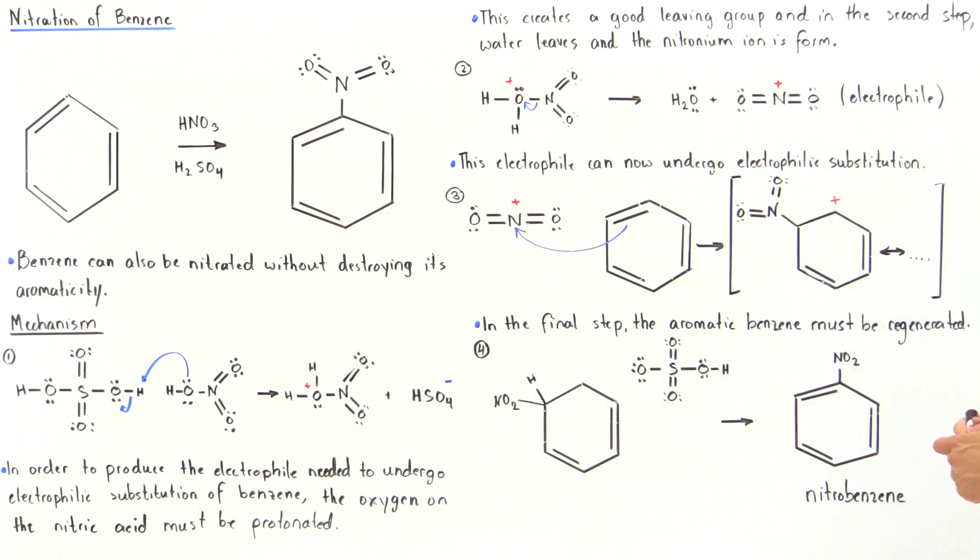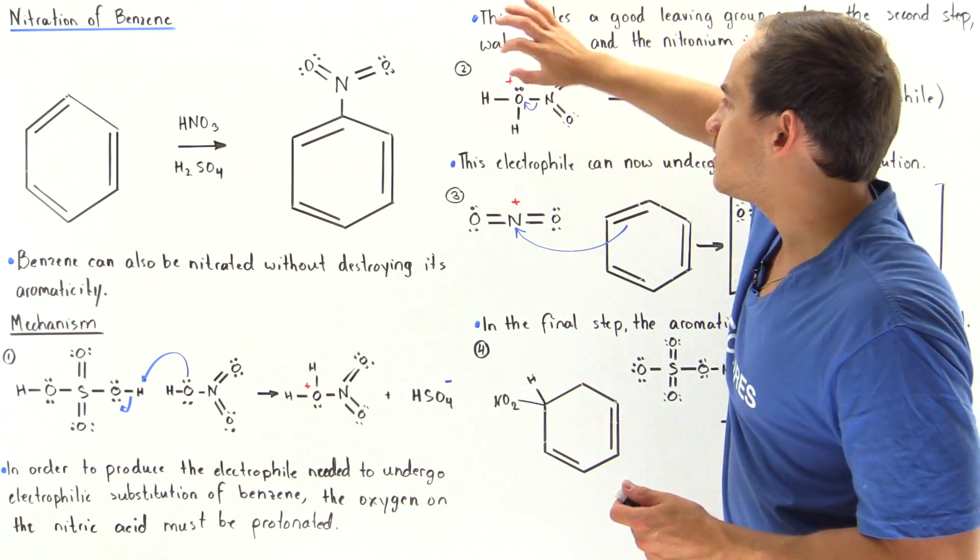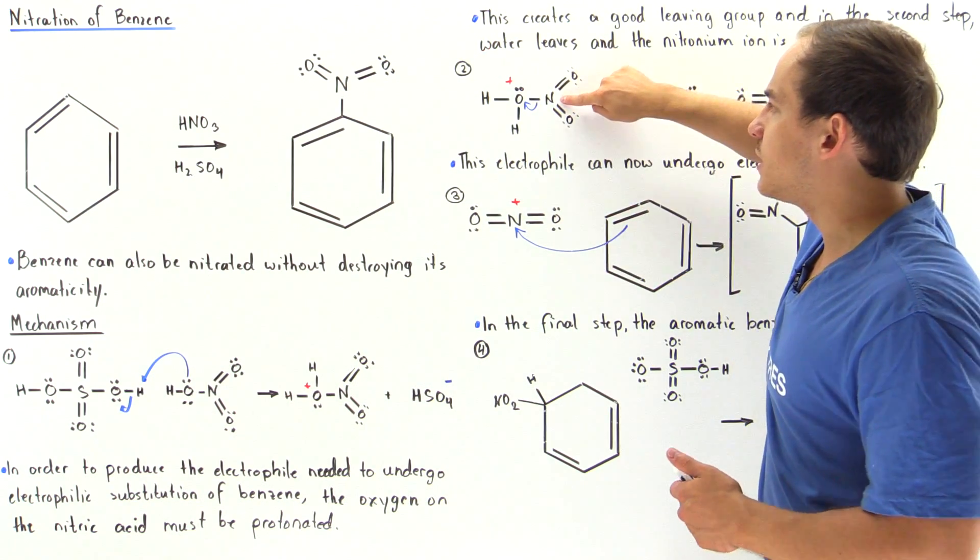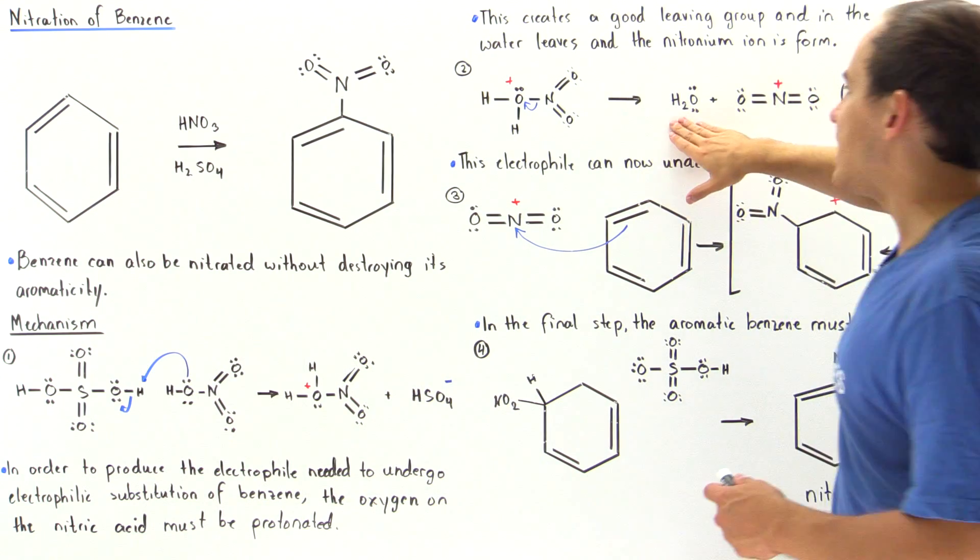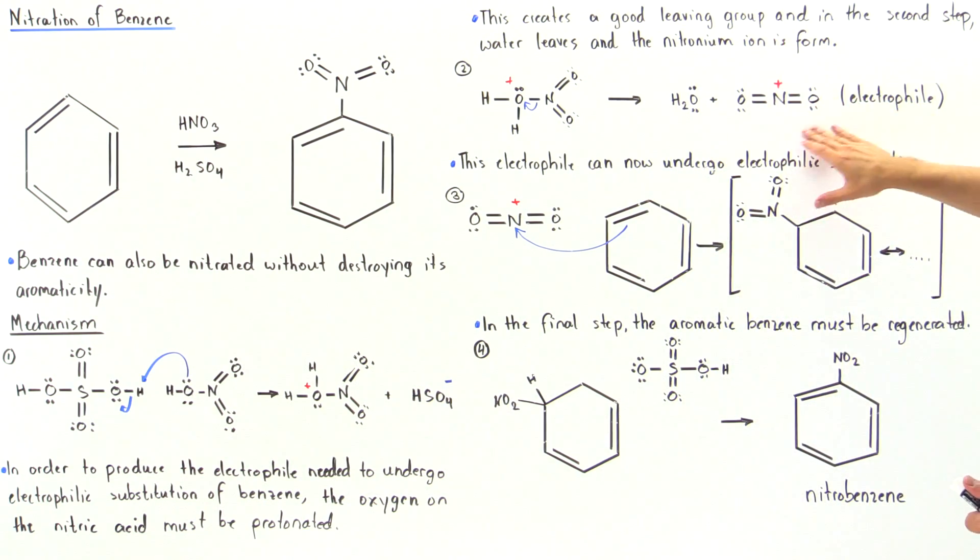In the second step, this relatively weak bond between the N and the oxygen breaks off and we form water as well as our electrophile, the nitronium ion. This electrophile can now act as a Lewis acid and react with our benzene.